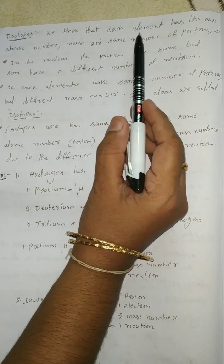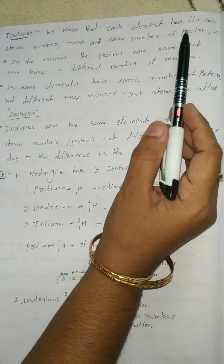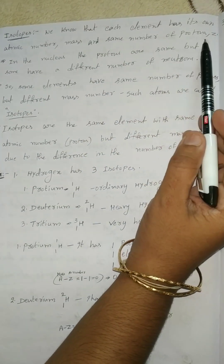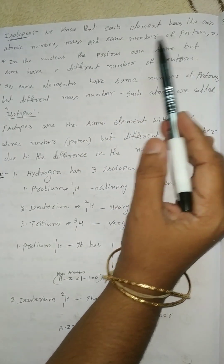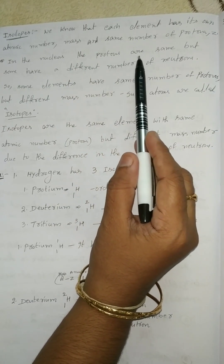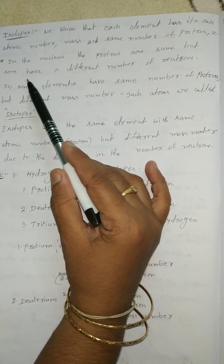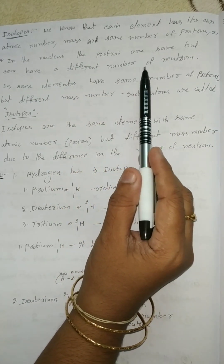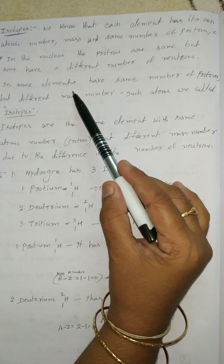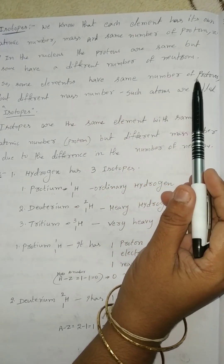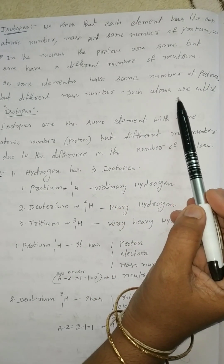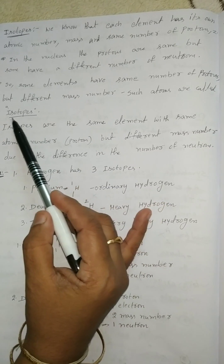We know that each element has its own atomic number, mass, and same number of protons. In the nucleus, the protons are same but some have different number of neutrons. Some elements have same number of protons but different mass number. Such atoms are called isotopes.